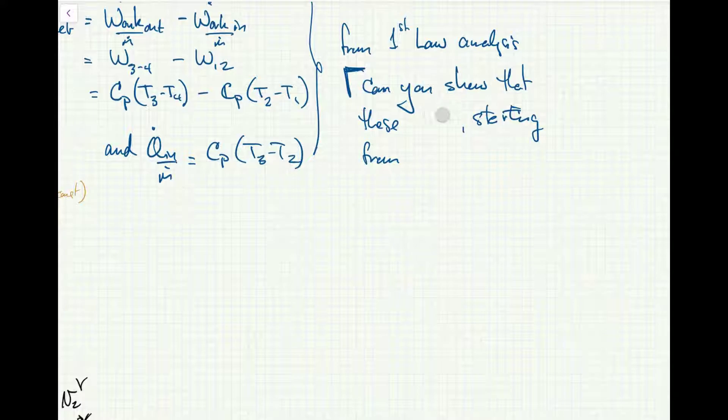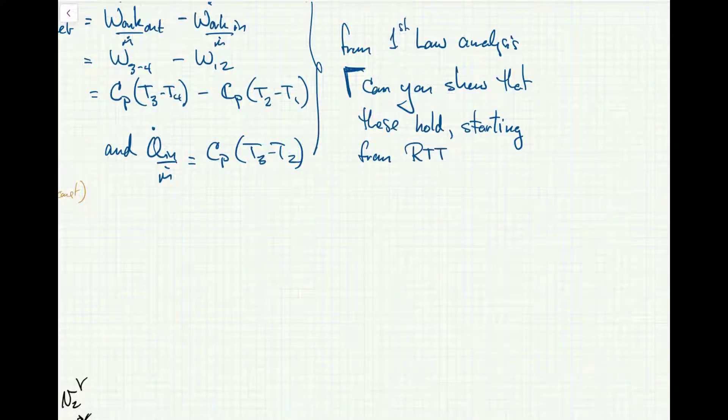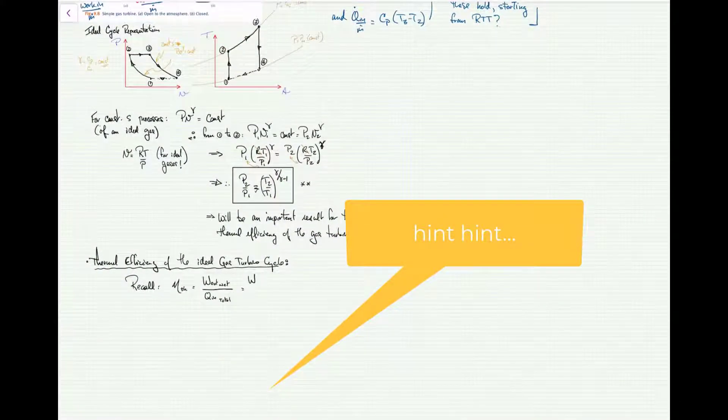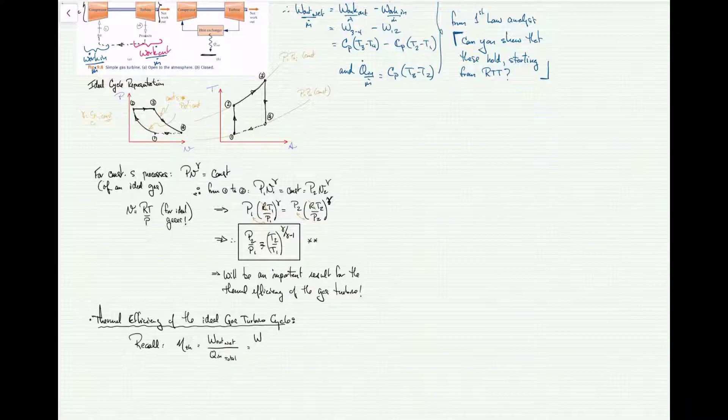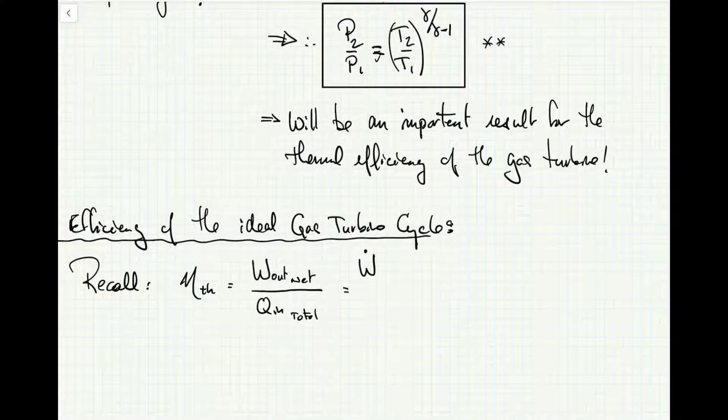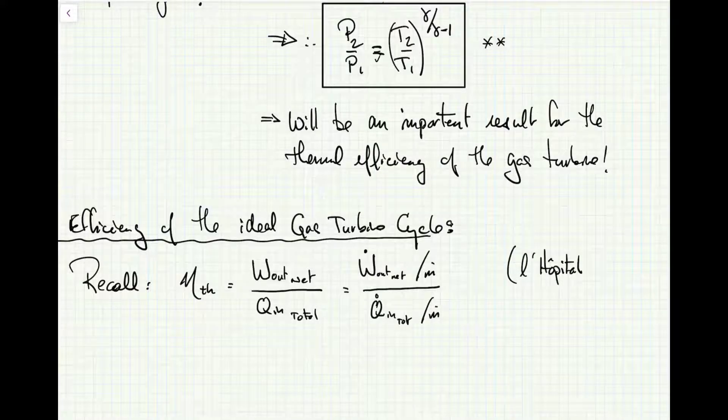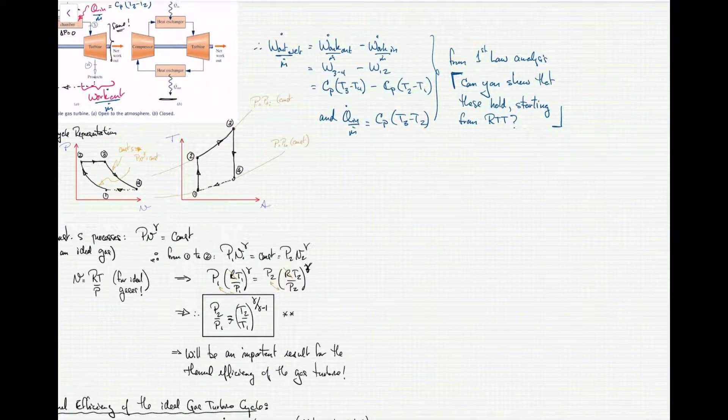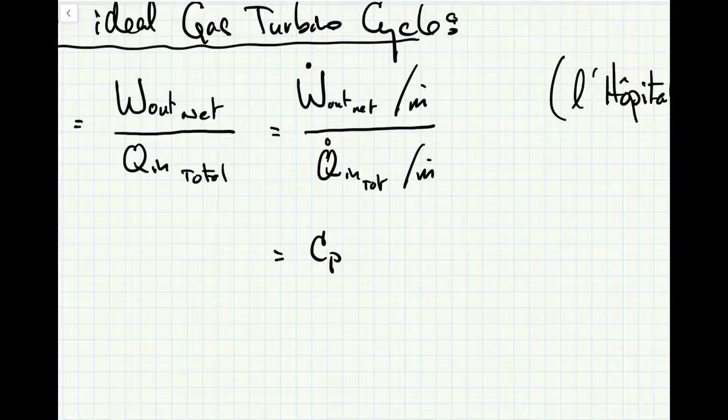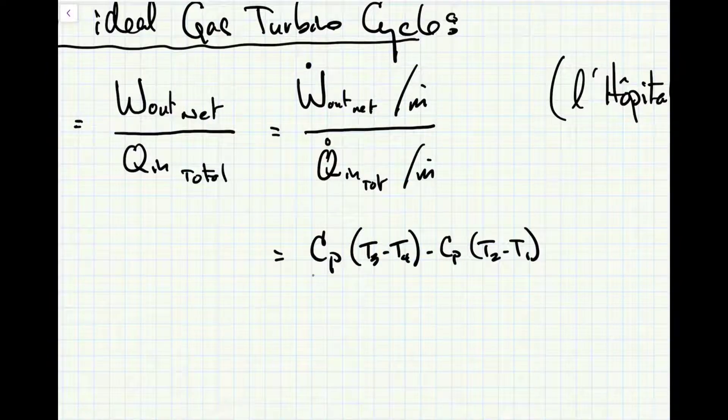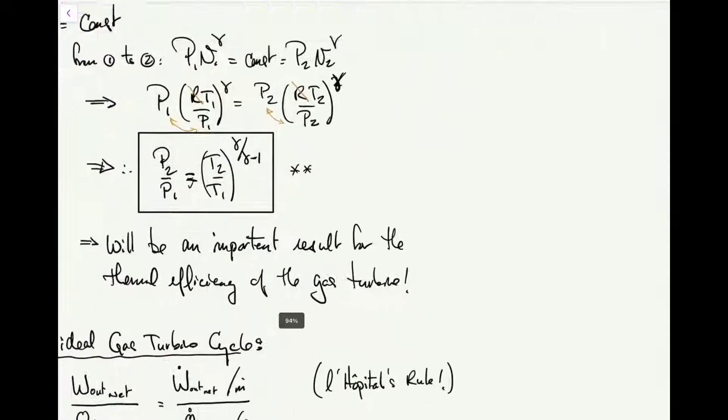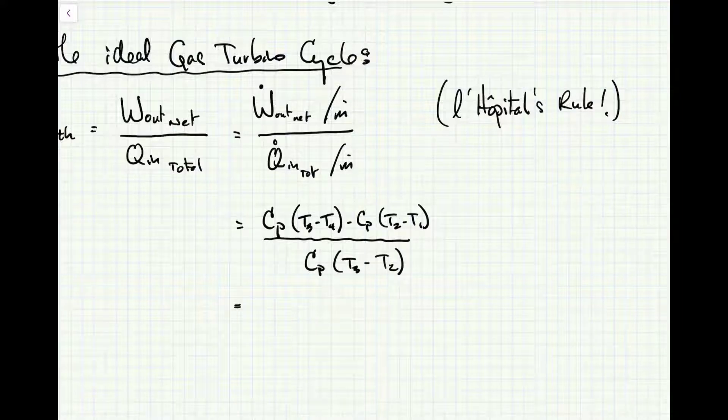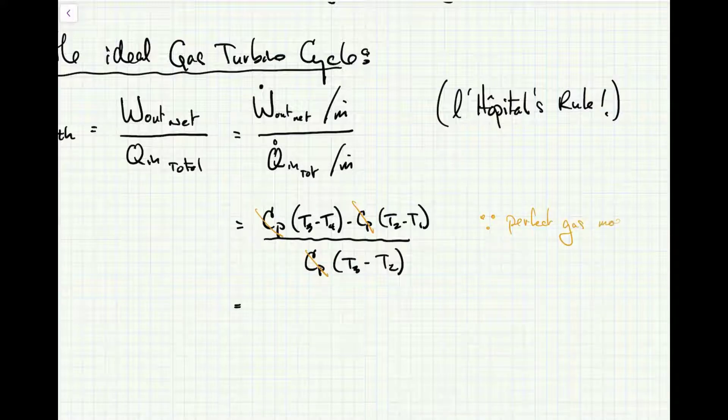Now we've got the net work out and the net heat in from our first law analysis for each of the components. Can you show this—can you go from line one to line two, showing these results from basic principles starting from the Reynolds transport theorem? This is something I expect you to be able to do at this point, applying the first law to an individual component. Notice that we're dealing with a perfect gas, so the c_p's are all the same and they cancel out.